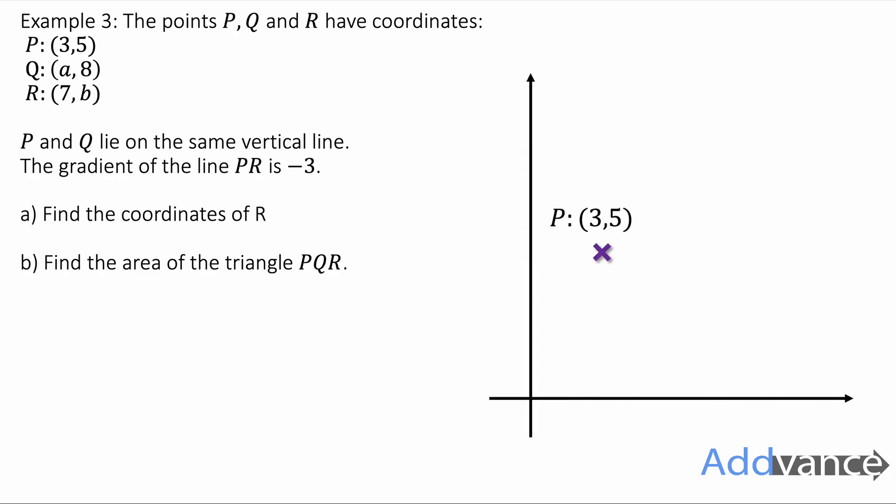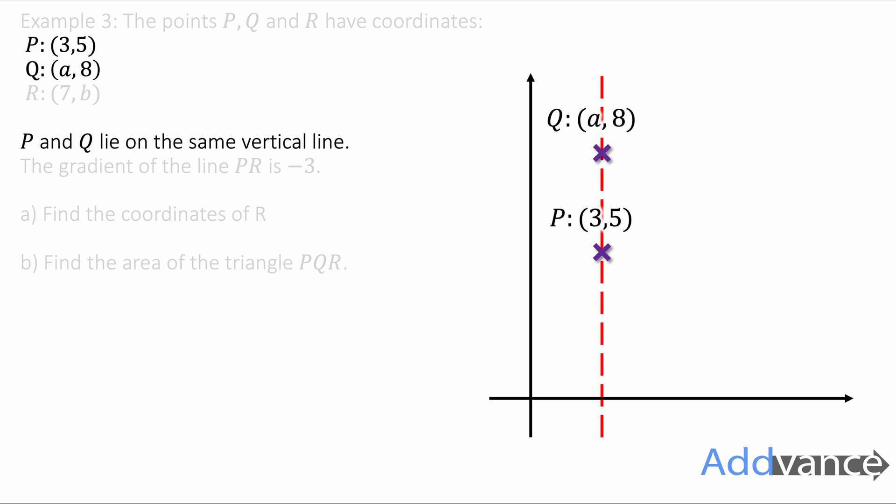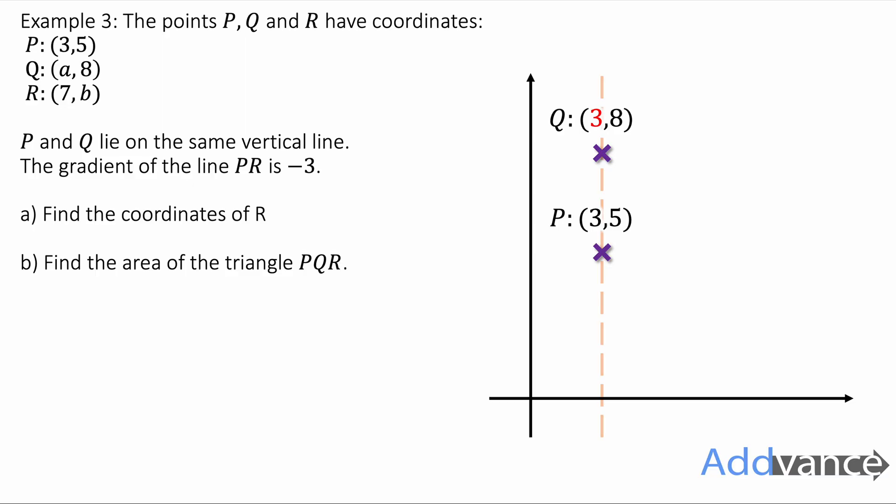Again, it's probably a good idea to draw this on a grid. We've definitely got the coordinates (3, 5) for P here. Point Q has the coordinates (a, 8). And crucially, P and Q lie on the same vertical line. So if you draw a vertical line from P, Q must be somewhere on this line. And because it's got a y-coordinate of 8, it's above P. The coordinate will be (a, 8), where a is 3. Because it's on the same vertical line, it's the same x-coordinate. It's the same distance across and a little bit higher. So we've understood the wording of the question to mean that Q is directly above P. And it has a coordinate of (3, 8). We've found the coordinates of Q.